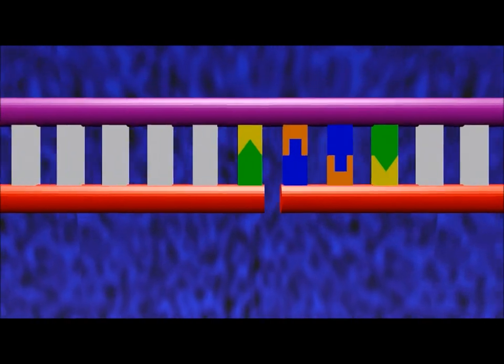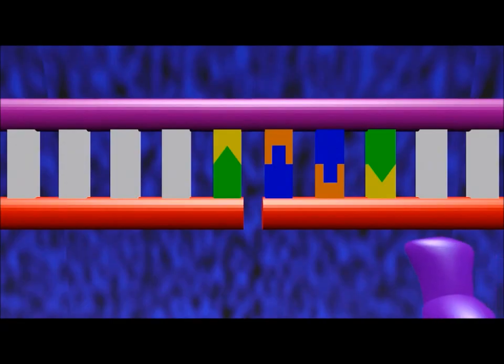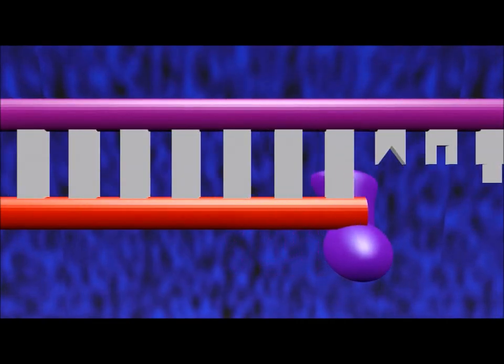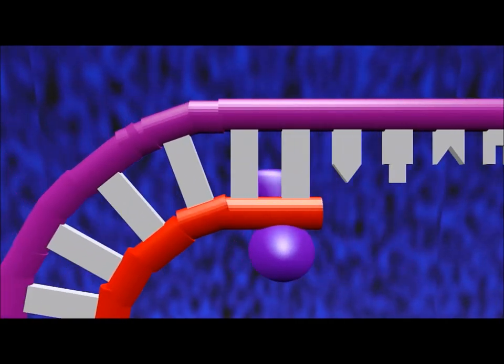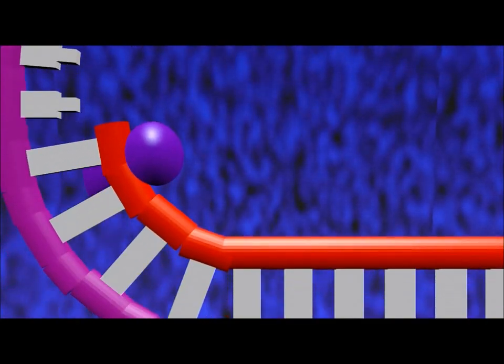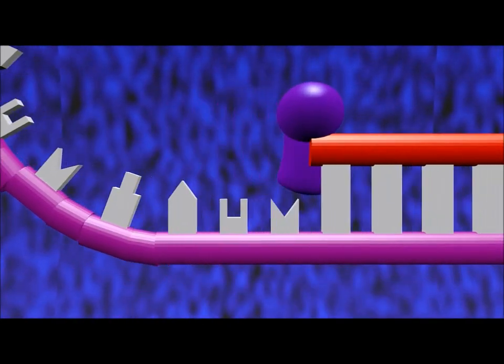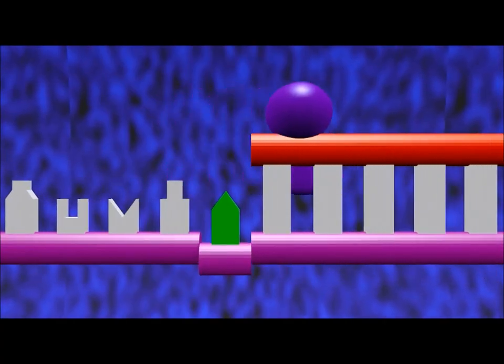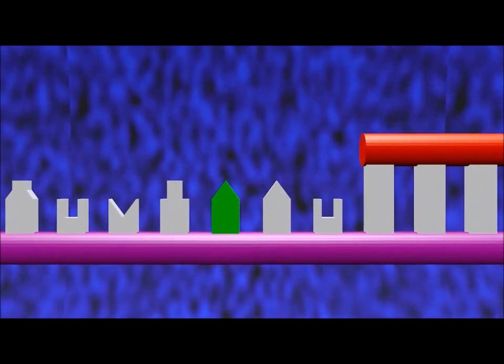The newly formed backbone incision allows an exonuclease to enter and begin excising nucleotides from the newly synthesized strand. The exonuclease excises the mismatch nucleotide and stops excising just beyond it.